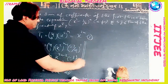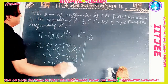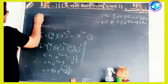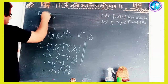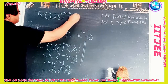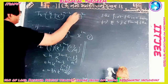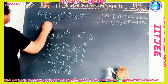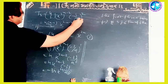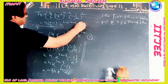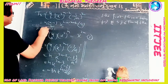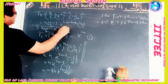Now we will find T3: T3 = nC2 · (x²)^(n-2) · (-3/x)^2. This gives [n(n-1)/2] · x^(2n-4) · 9, so T3 = [9n(n-1)/2] · x^(2n-4) ... (3).